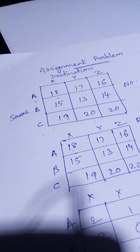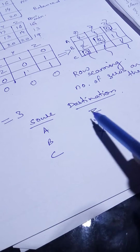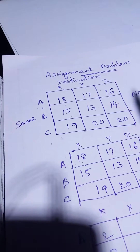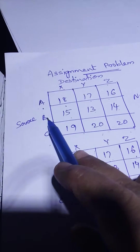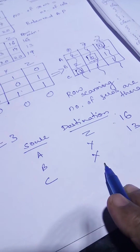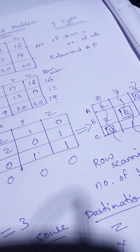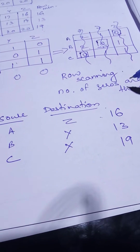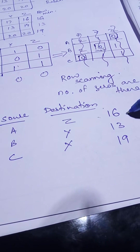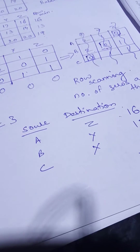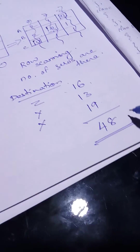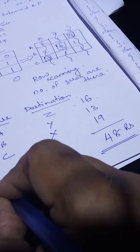Now refer back to the original matrix for the actual values. A to Z = 16, B to Y = 13, C to X = 19. Adding them: 16 + 13 + 19 = 48. So the minimum transportation cost is 48 rupees.